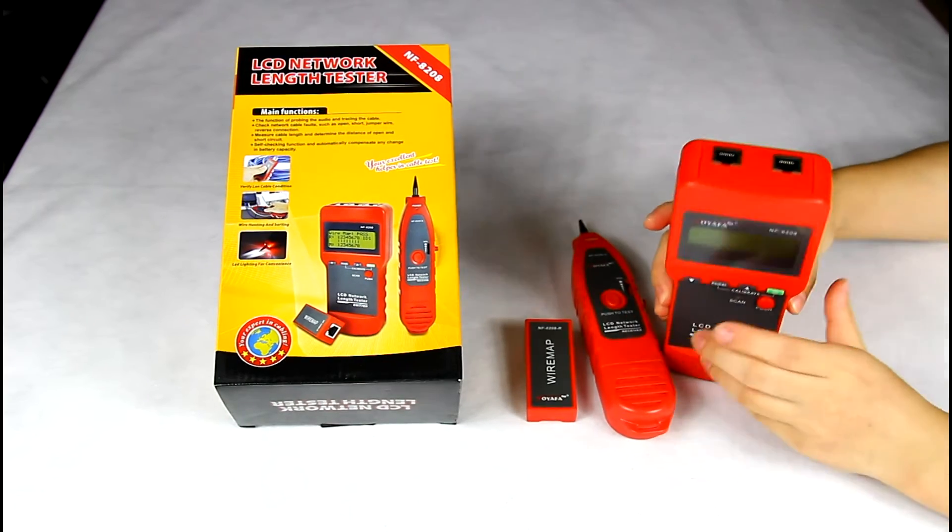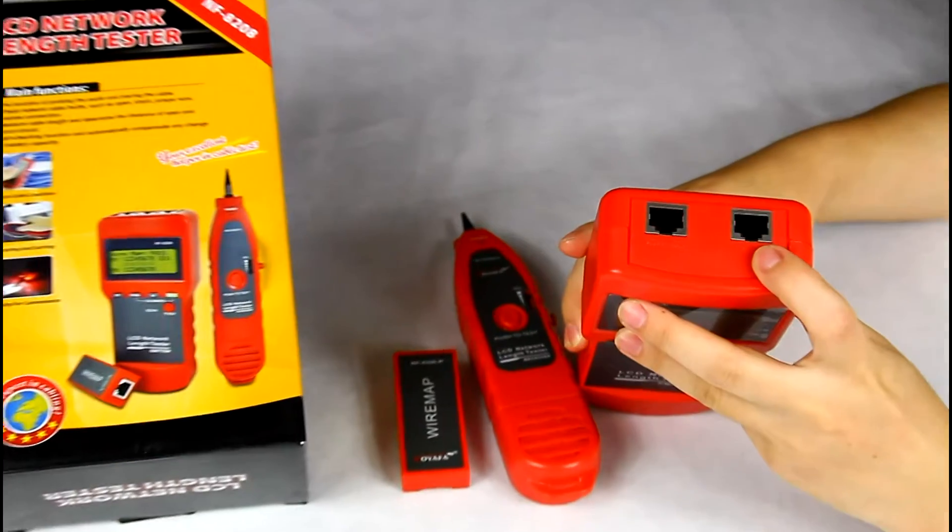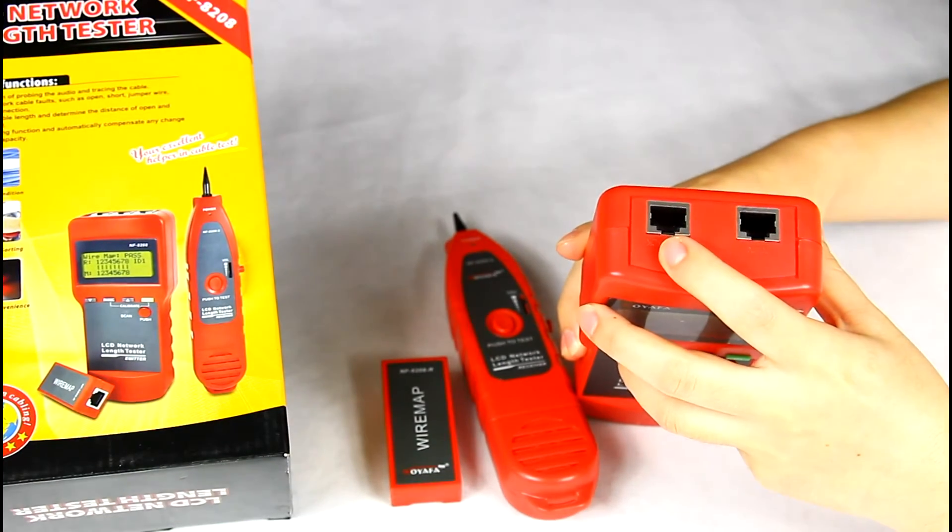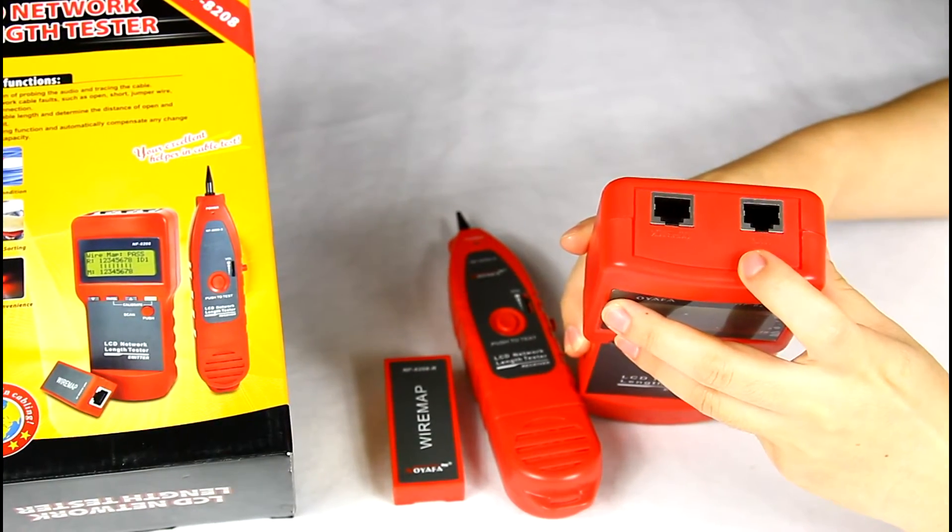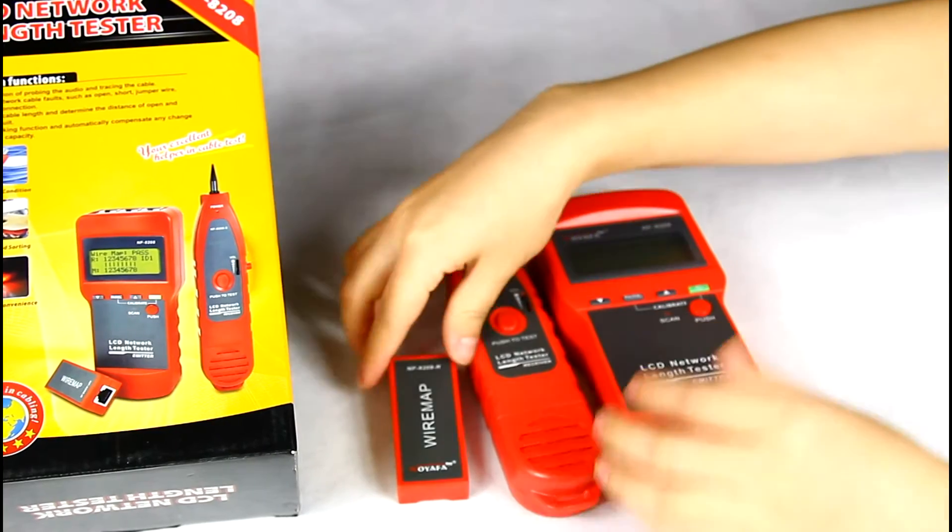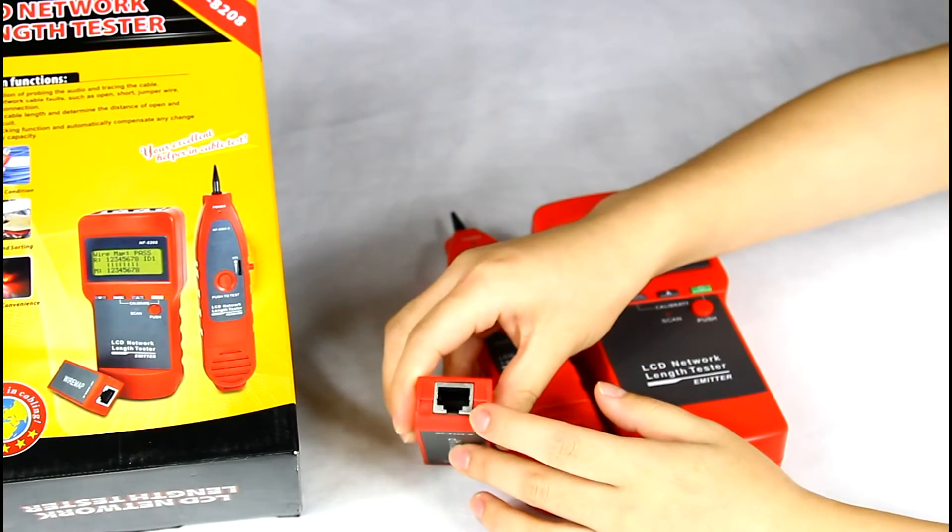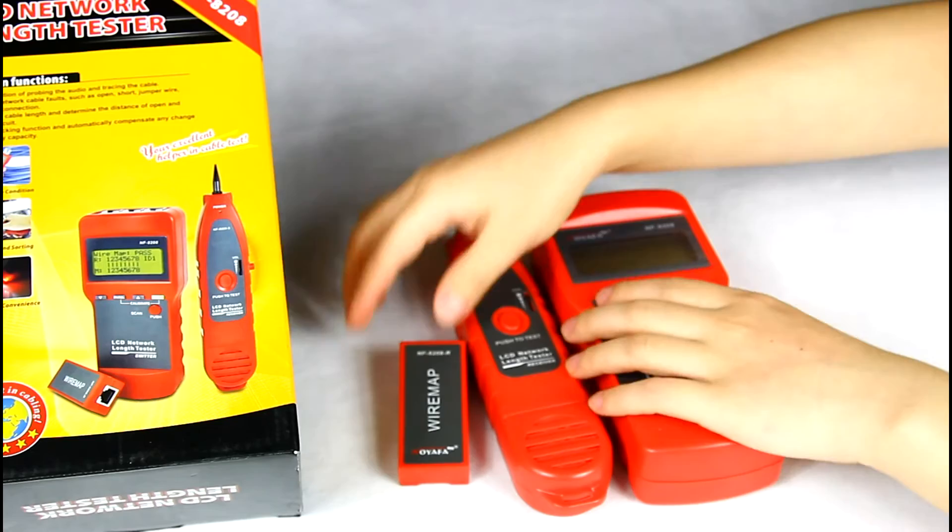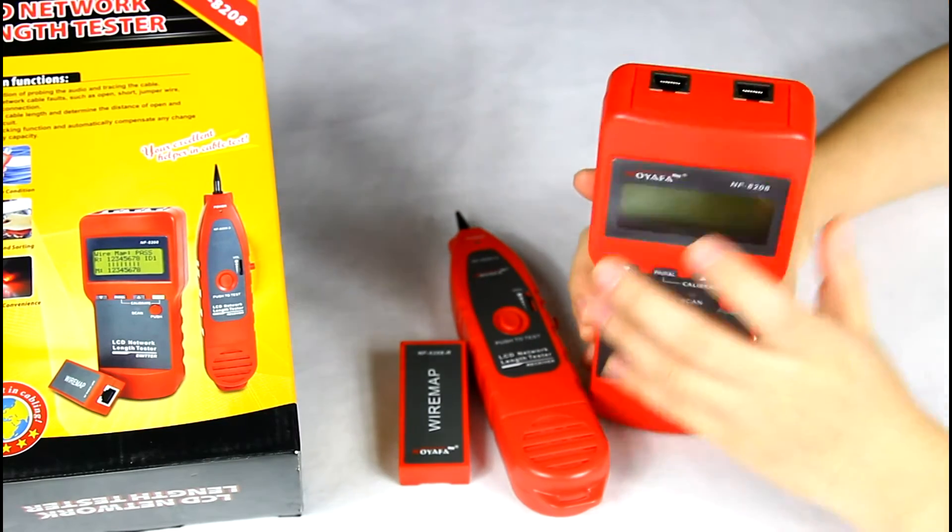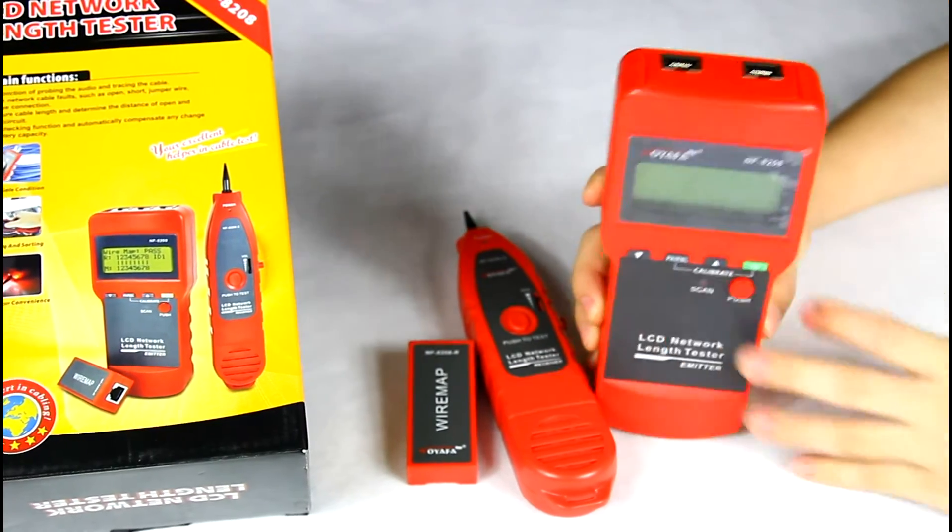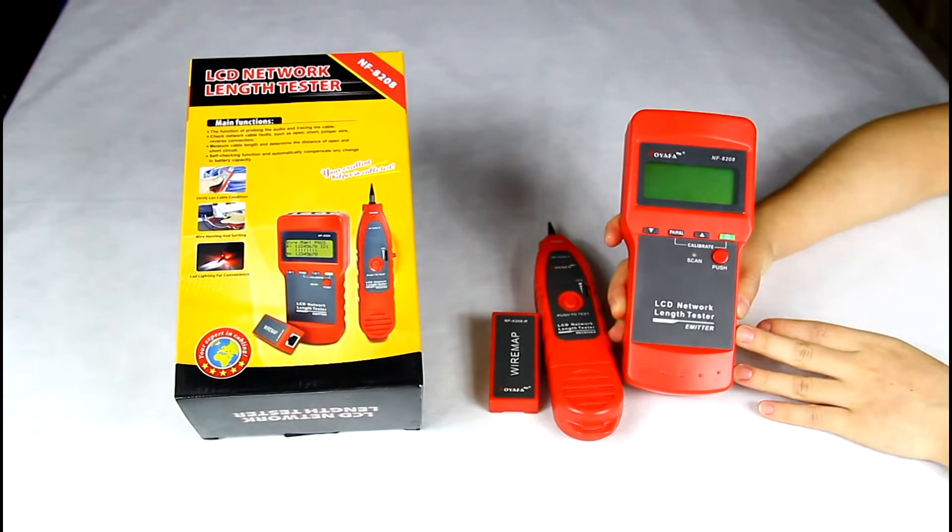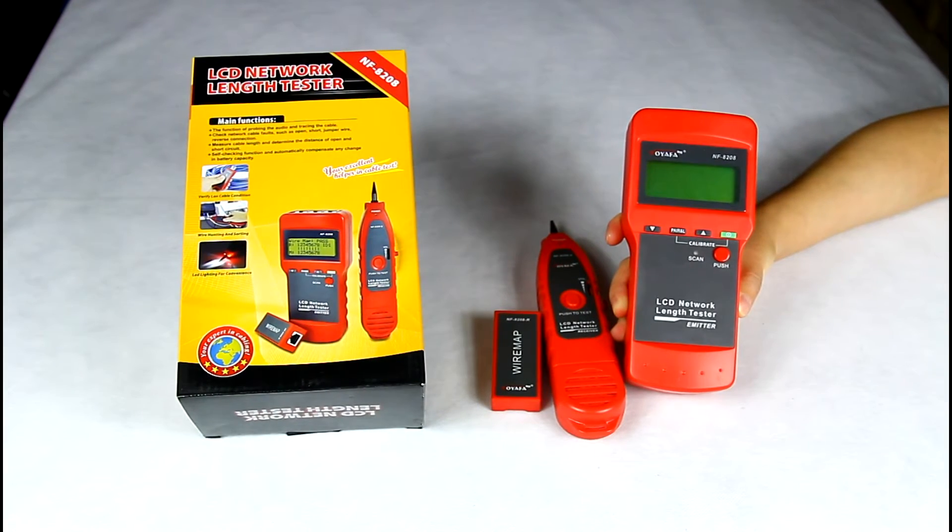This is the main and loopback port on the top of the main tester. The remote has one RJ45 port. This device is used to test network cable continuity, network cable length, and trace network cable and electric wire.